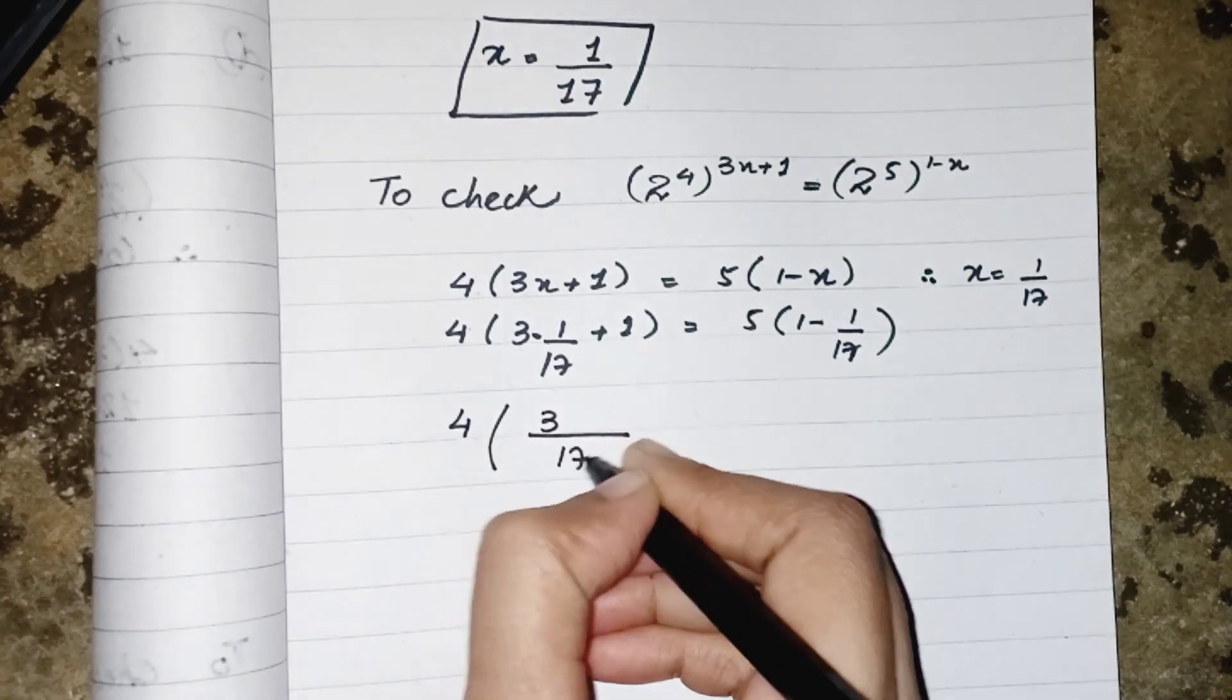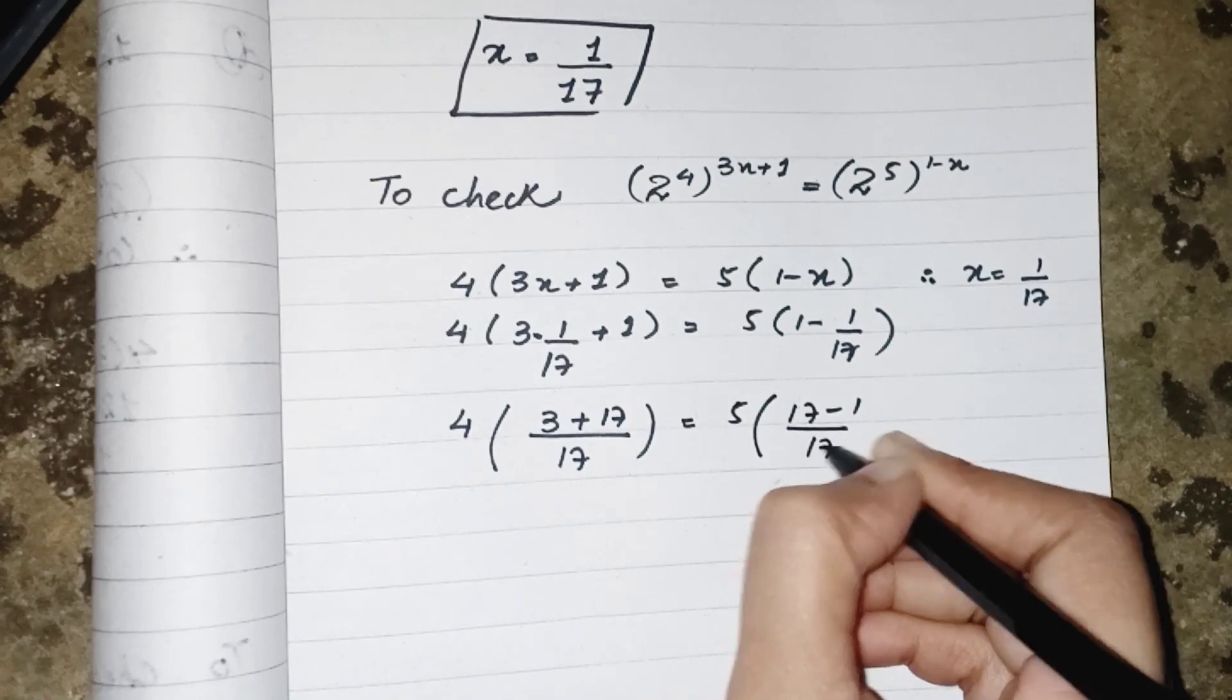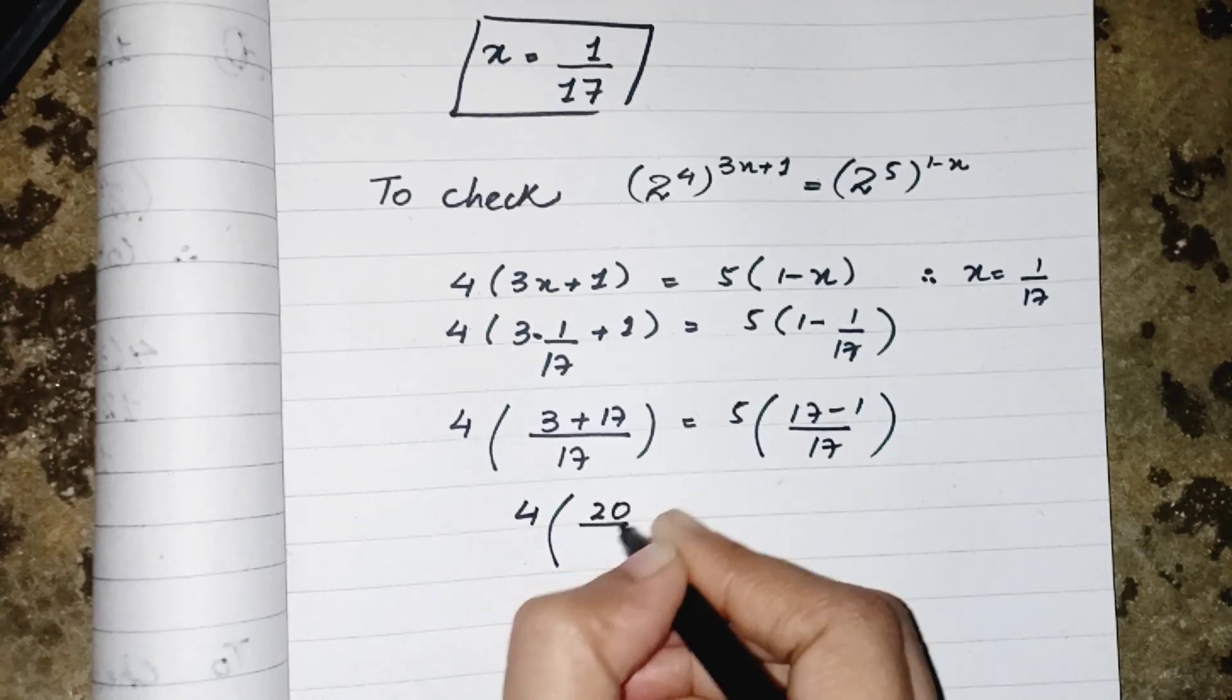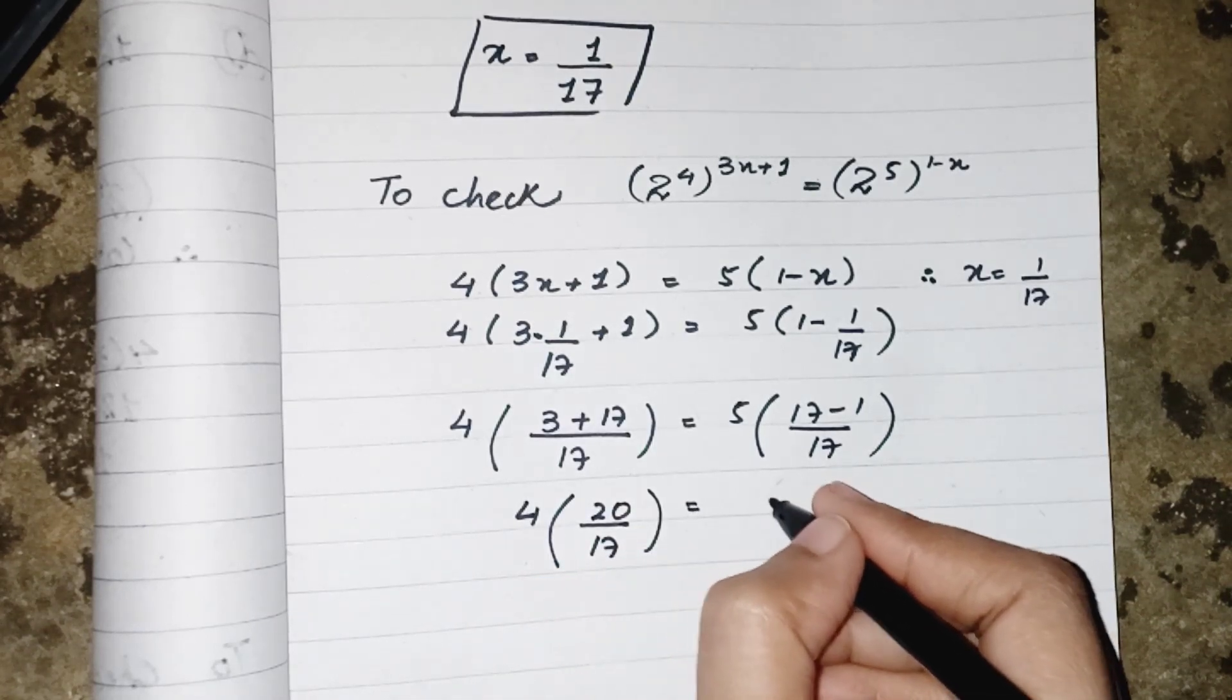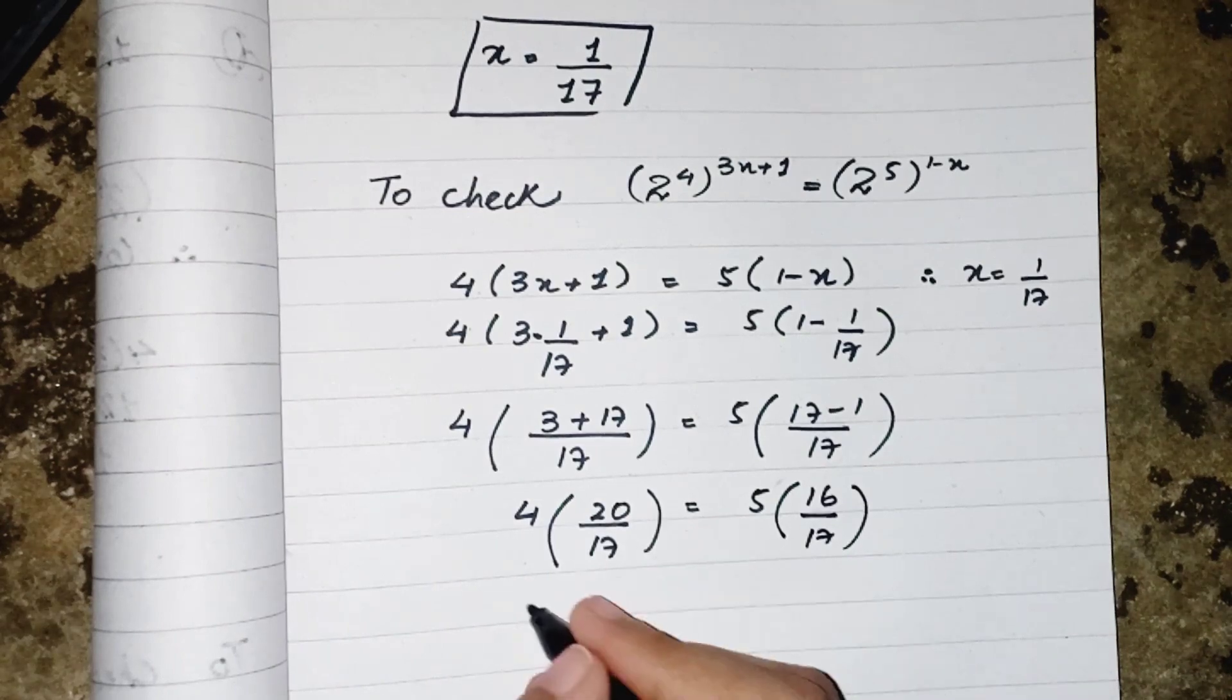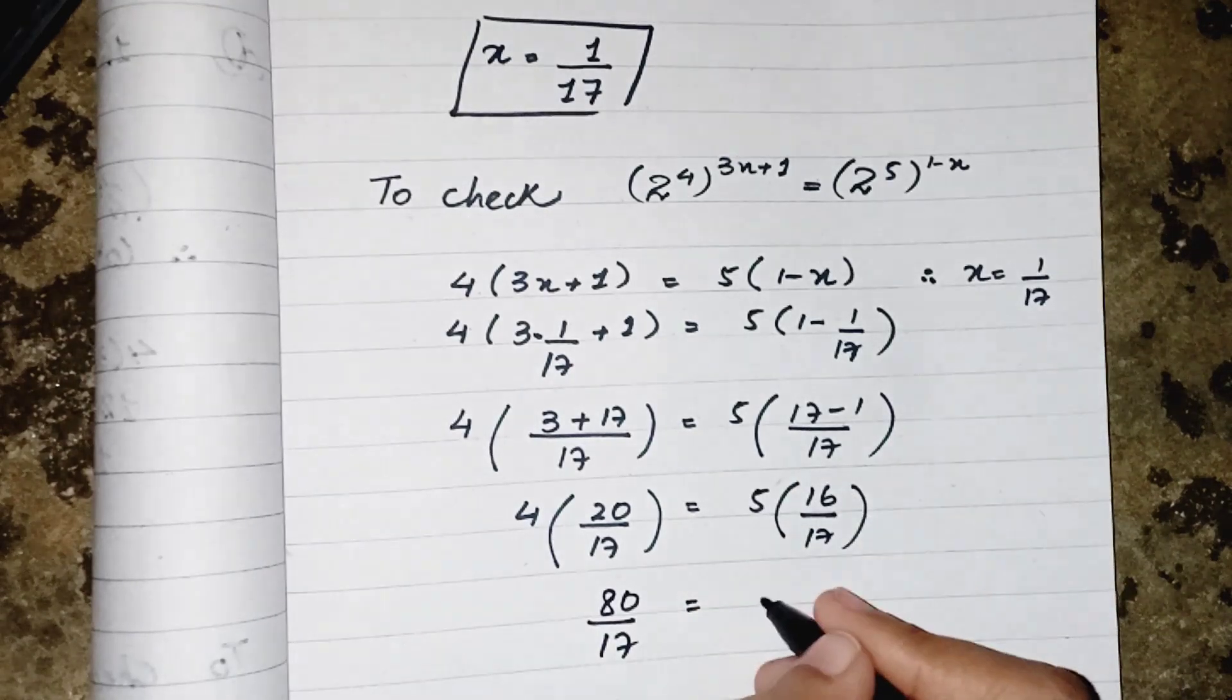So we get 20 upon 17 on the left side and 16 upon 17 on the right side. When 20 multiply by 4 will result as 80 upon 17, and 5 multiply by 16 will result as 80 upon 17.